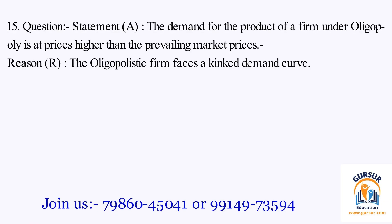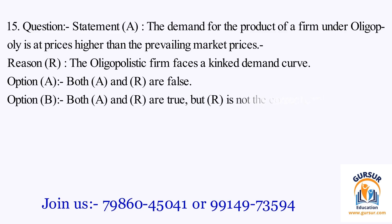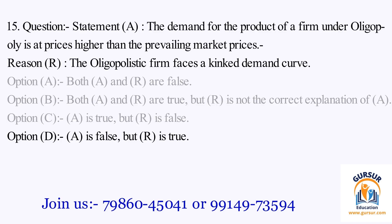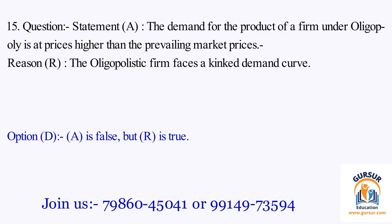Question number 15. Statement A: The demand for the product of a firm under oligopoly is at prices higher than the prevailing market prices. Reason R: The oligopolistic firm faces a kinked demand curve. Option A: Both A and R are false. Option B: Both A and R are true, but R is not the correct explanation of A. Option C: A is true but R is false. Option D: A is false but R is true. The right answer is Option D, that is A is false but R is true.